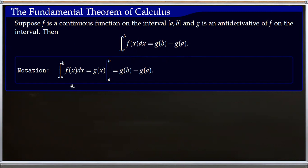Here is the notation that we generally use. This bracket notation means evaluate function g at b and a, and then take the difference, as we have here.